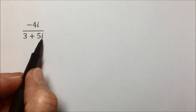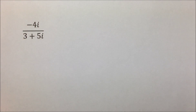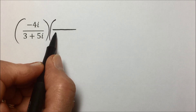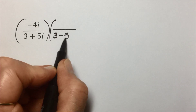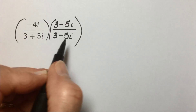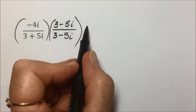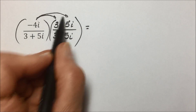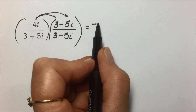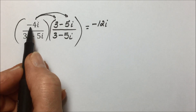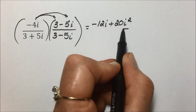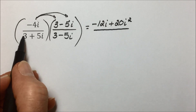In the next example, they're asking us to simplify. The problem is we have i — a radical — in the denominator, and we want to eliminate it. To do that, we'll multiply by the conjugate of the denominator: the same first and second terms but with the opposite sign. What we do in the denominator we will do to the numerator, keeping this equivalent to 1. In the numerator, we use the distributive property: each term is multiplied by negative 4i. The first term results in negative 4 times 3, or negative 12i. Negative times negative is positive: 4 times 5 is 20, and i times i is i squared.